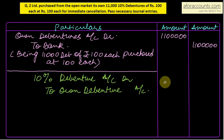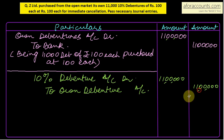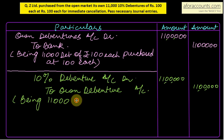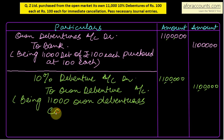The face value of the 10% debentures is 11,00,000 and the own debentures purchase cost is also 11,00,000. Narration: being 11,000 own debentures cancelled. In this question, the face value and the purchase cost per debenture were equal. Now we will also see the situations where face value is greater than purchase cost and vice versa.